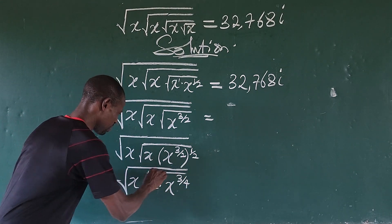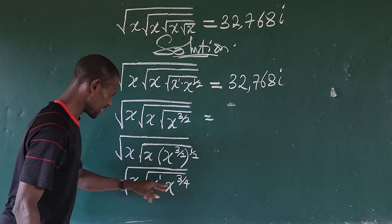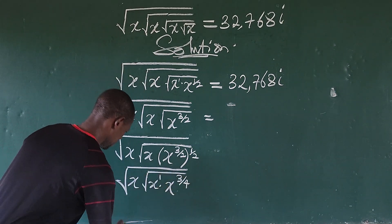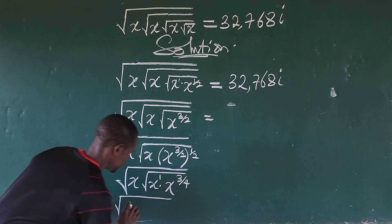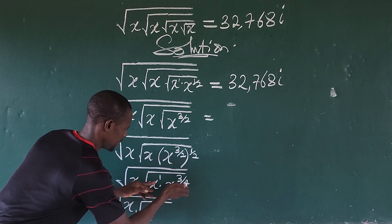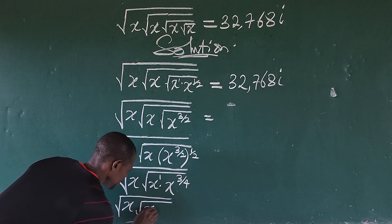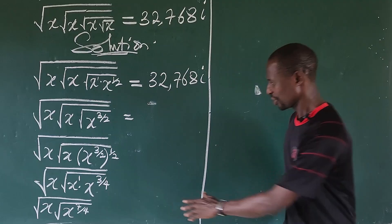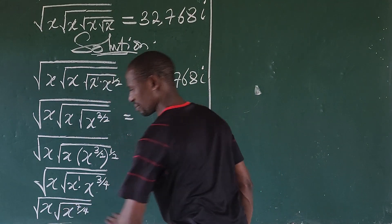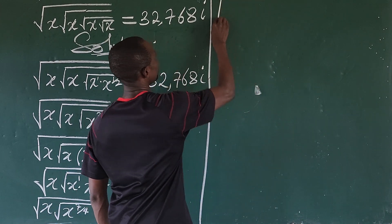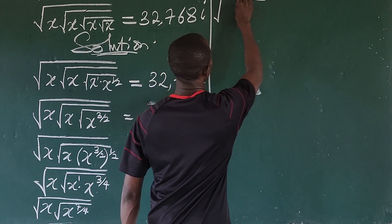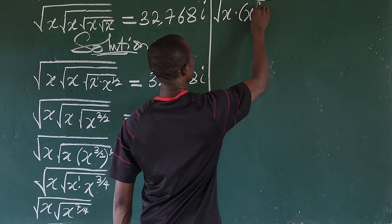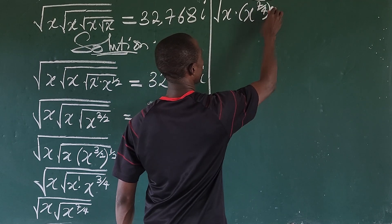This X is to the power of 1, so we add this exponent and 3 over 4 together, giving us 7 over 4. So we have X to the power of 7 over 4. Continuing, we now deal with the next radical: X times the bracket X to the power of 7 over 4, all raised to 1 over 2.